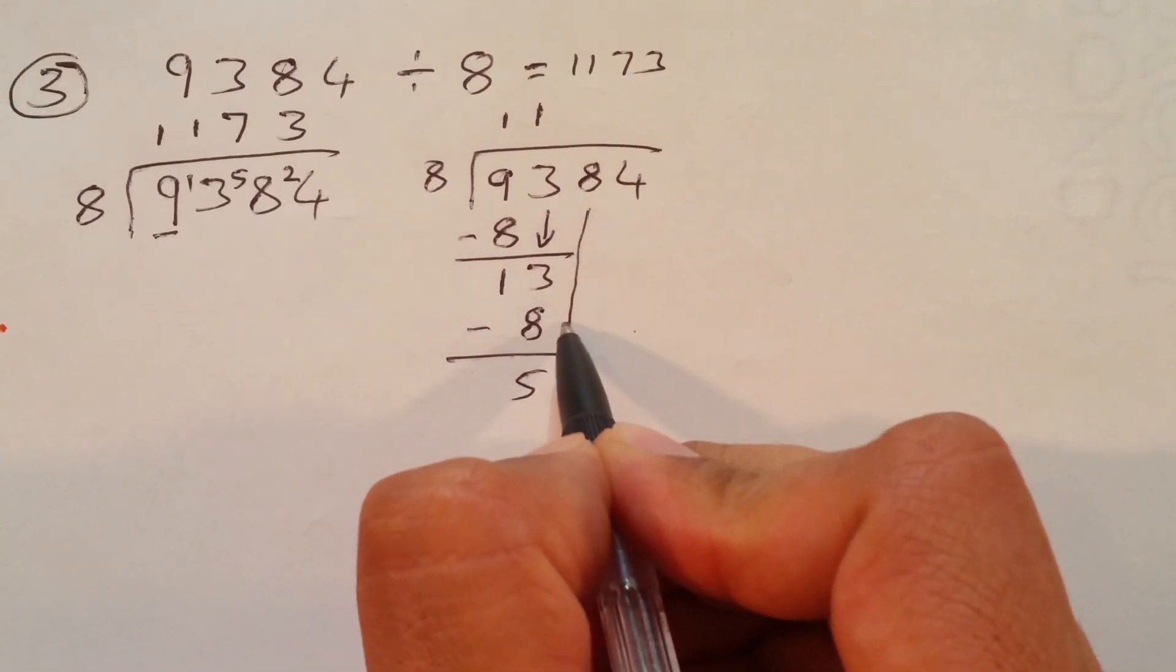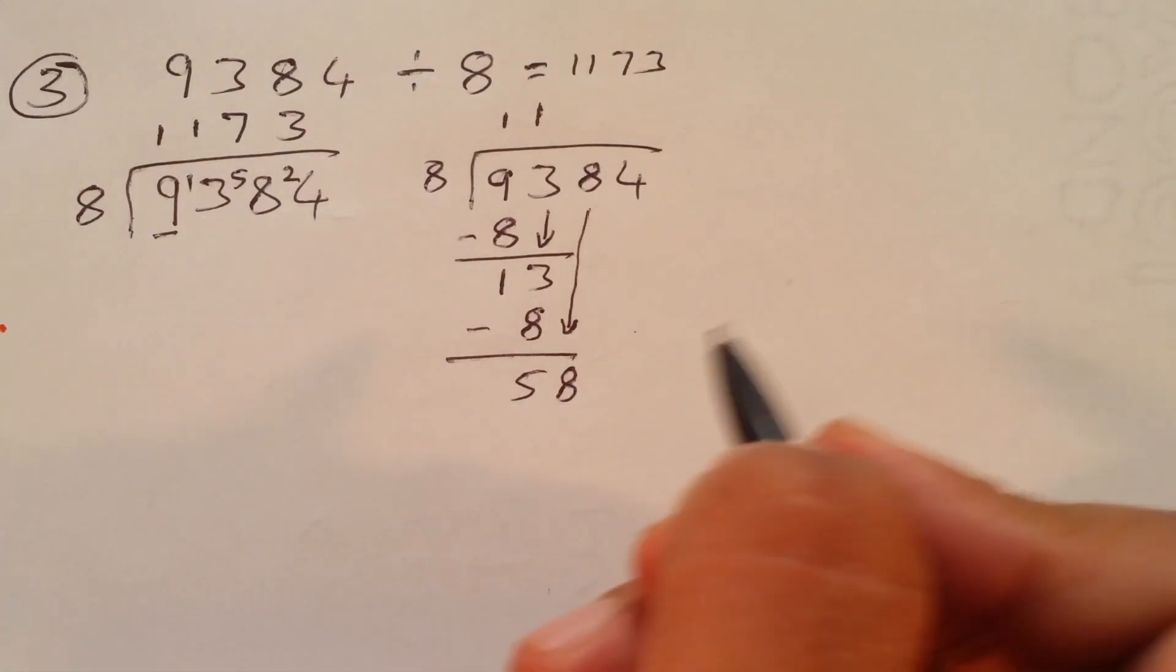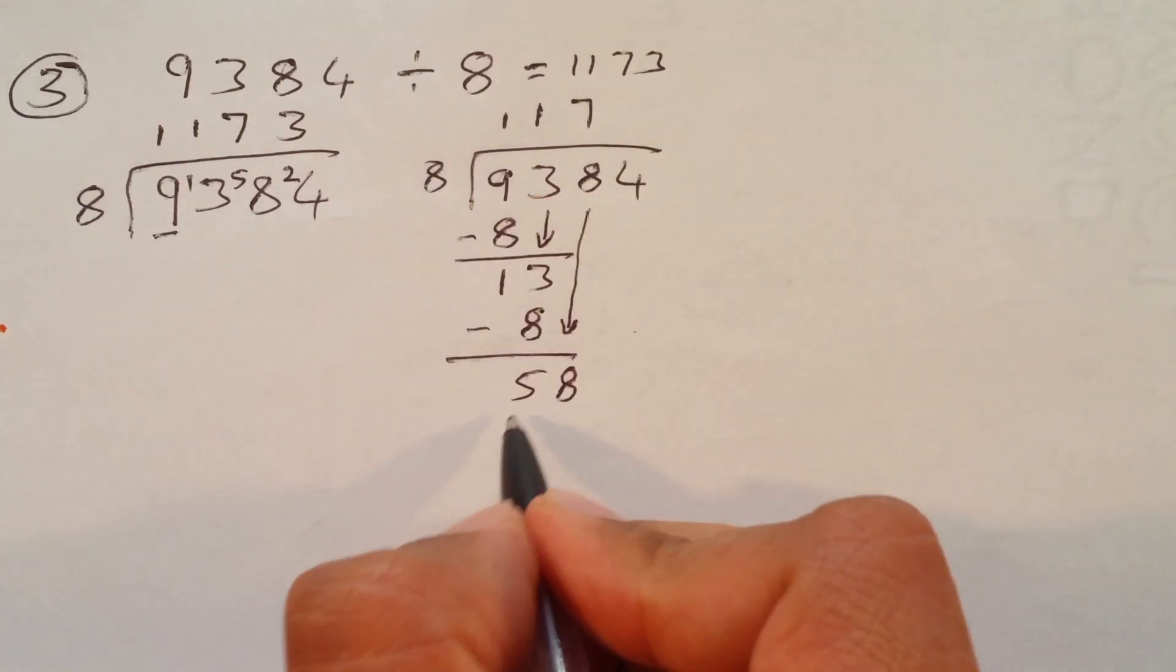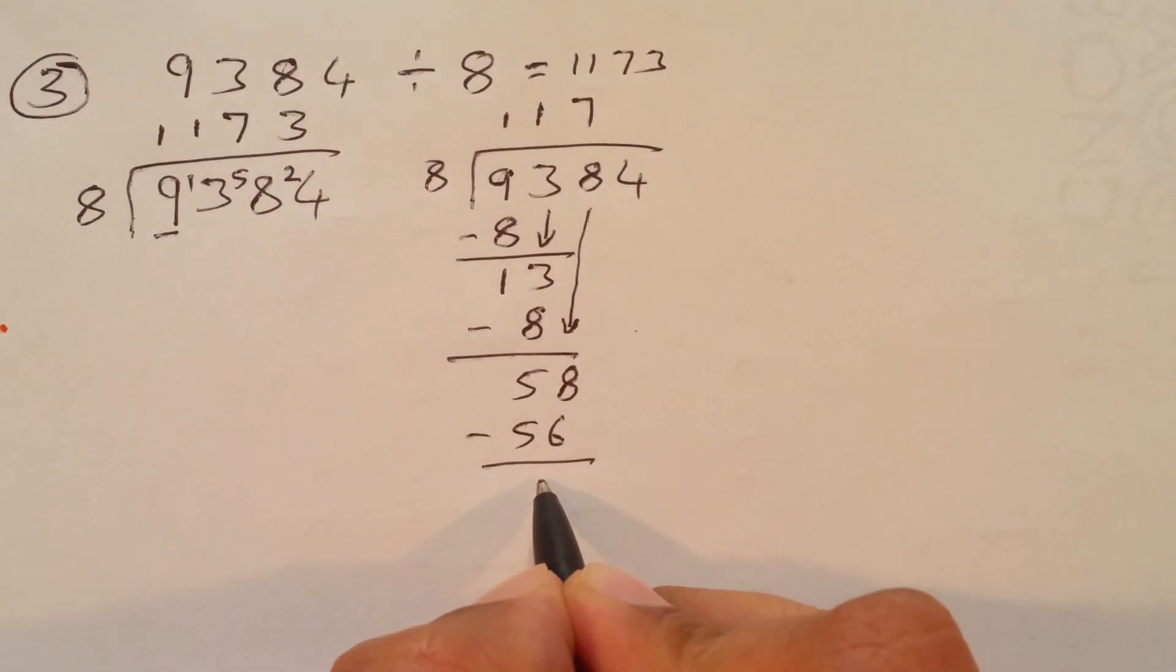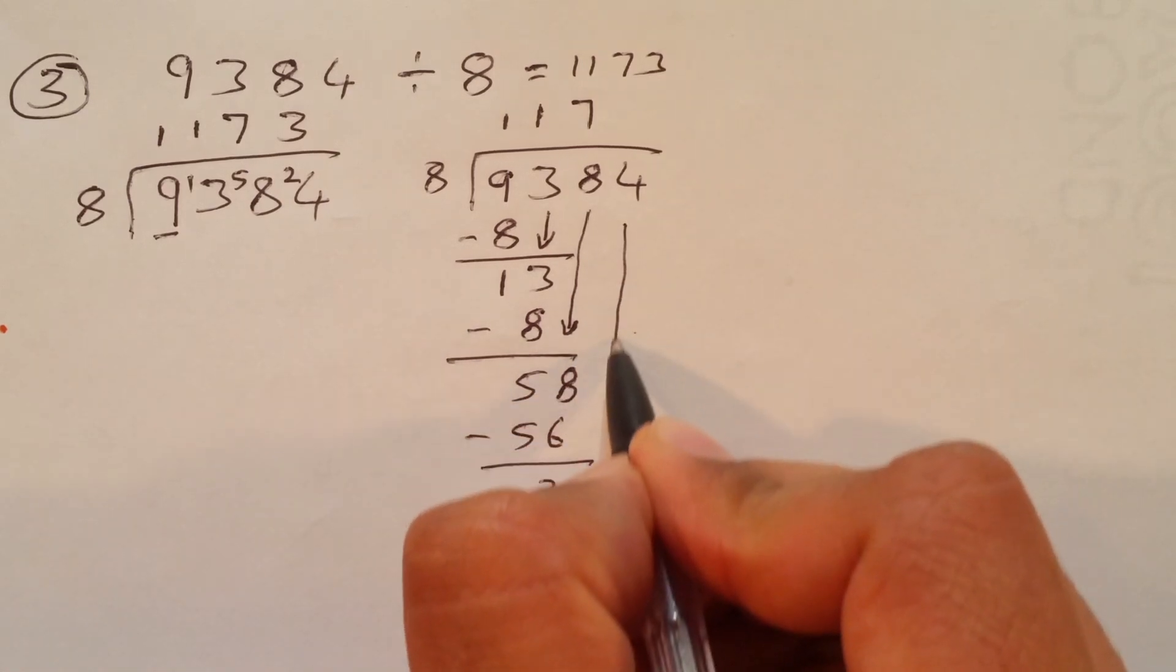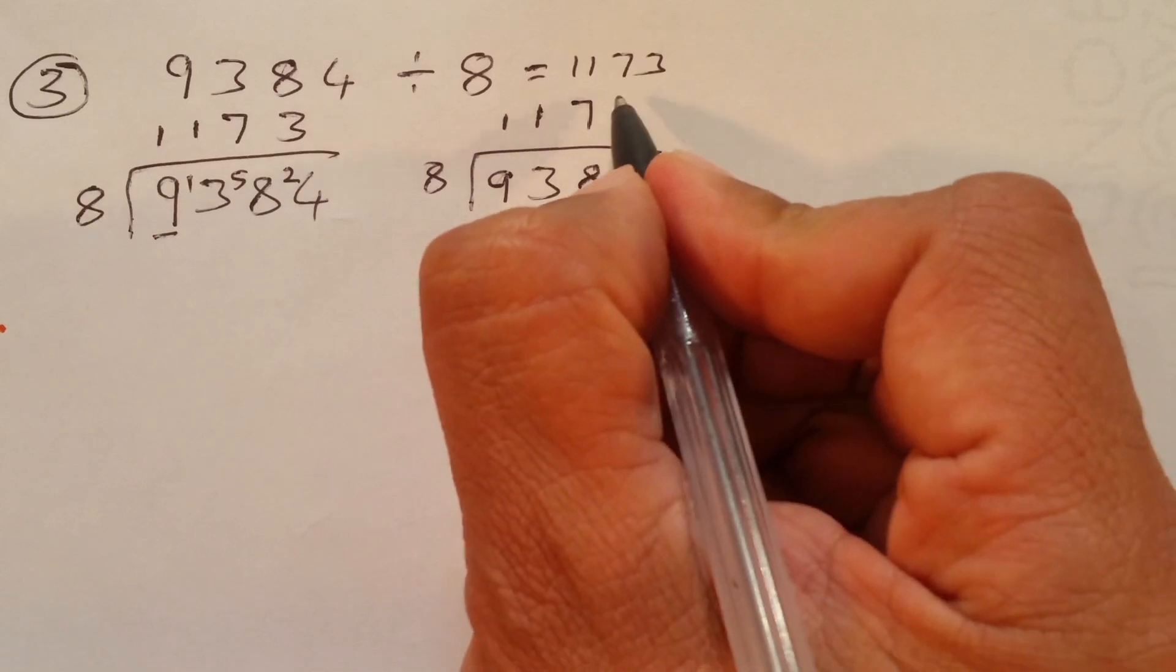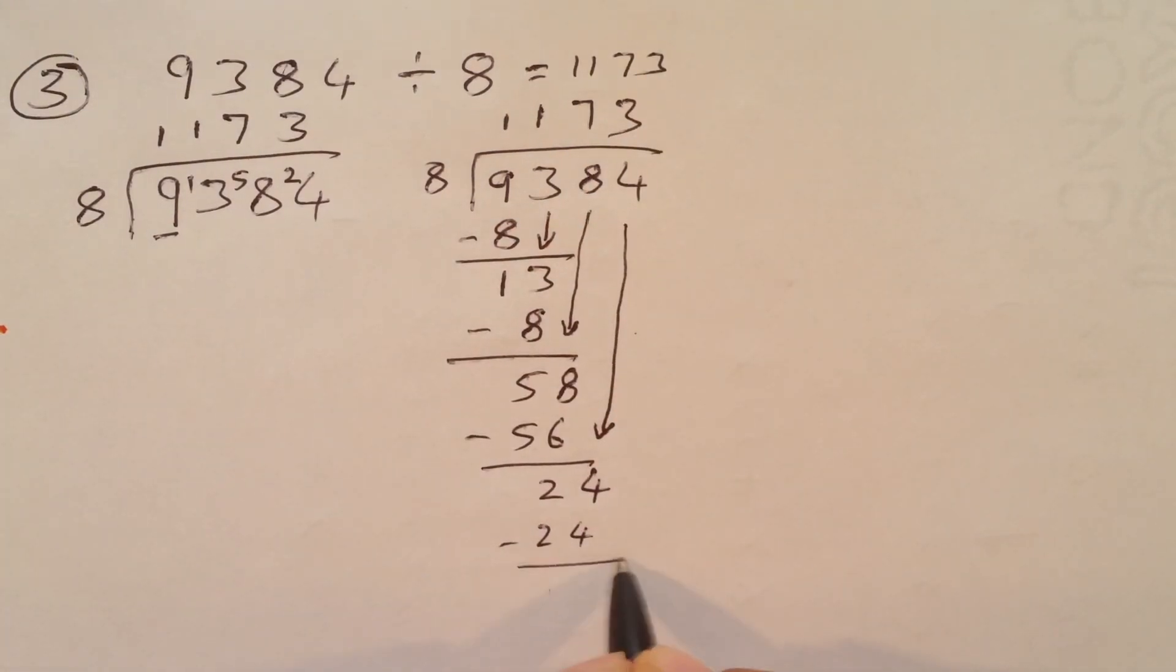Bring down that 8, which is 8. Read 8 table till you get 58, 7, 8, 56. Subtract 2 and bring down the last number, which is 4. 8 times 3, 8 times 3, 24. That's done. That's it, no remaining.